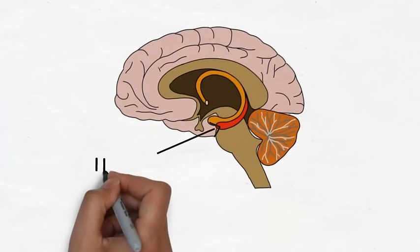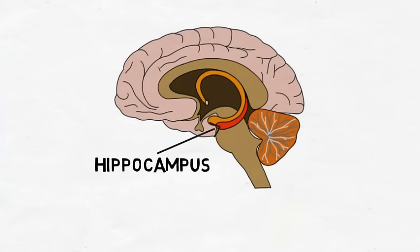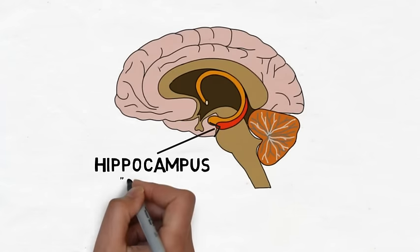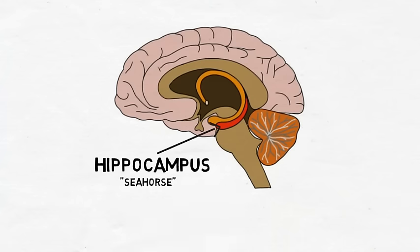There is a hippocampus in the temporal lobe of each cerebral hemisphere. The name hippocampus comes from the Greek for seahorse, because when it is removed from the brain, it vaguely resembles a seahorse. Although it has many functions, the hippocampus is best known for its role in memory.